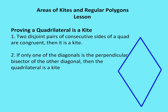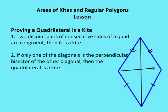Moving on — to prove a quadrilateral is a kite: if two disjoint pairs of consecutive sides of a quadrilateral are congruent, then it is a kite. If only one of the diagonals is a perpendicular bisector of the other diagonal, then the quadrilateral is a kite. If two diagonals are both perpendicular bisectors, then you have a different figure that is not a kite.